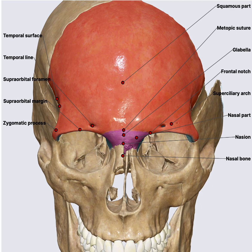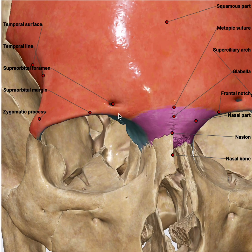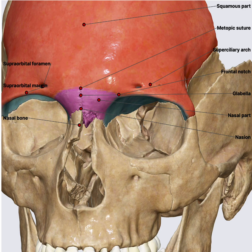When talking about the squamous part, there are certain important structures we must be aware of. One important structure is the supraorbital foramen. Next to that is another important structure called the frontal notch, also called the supratrochlear notch.